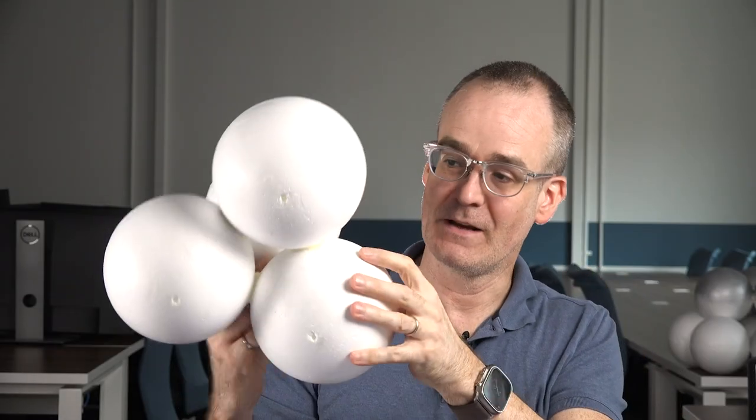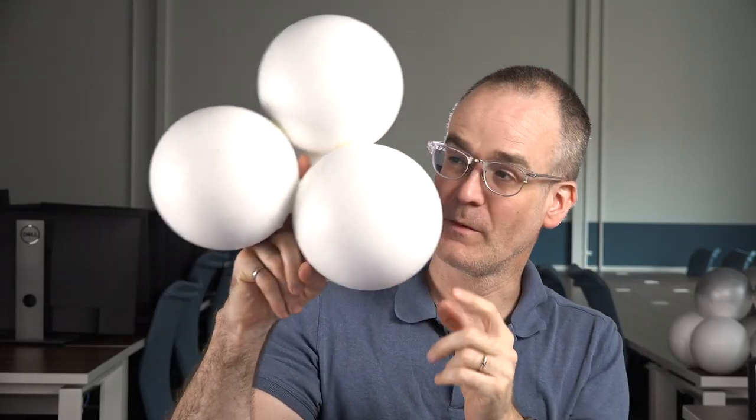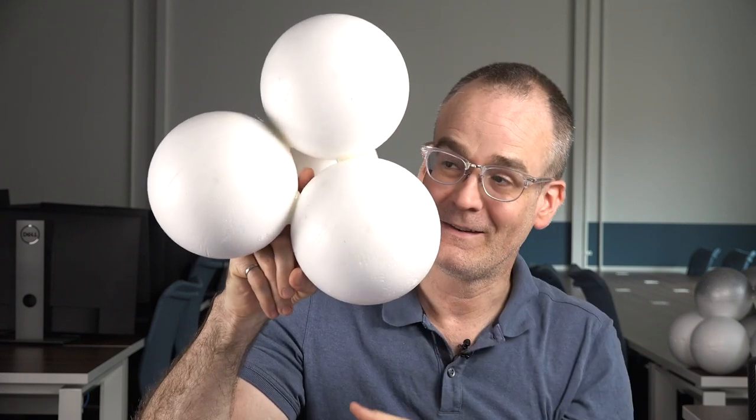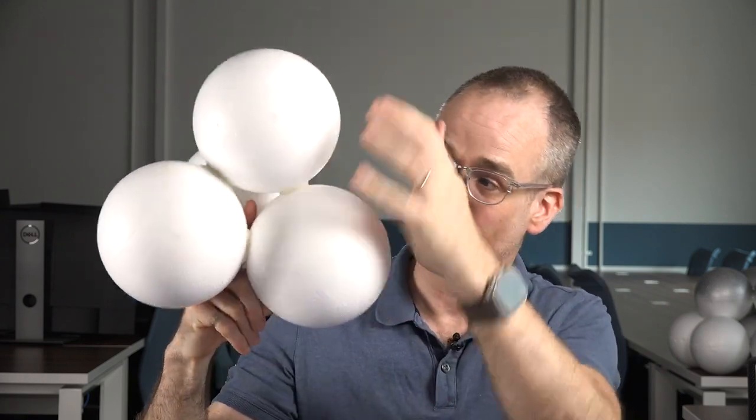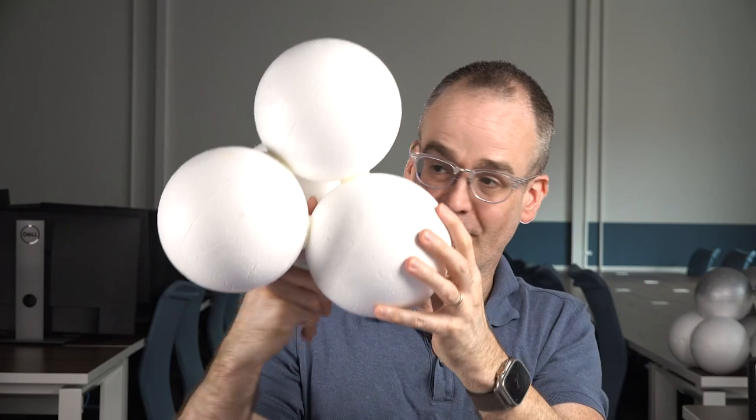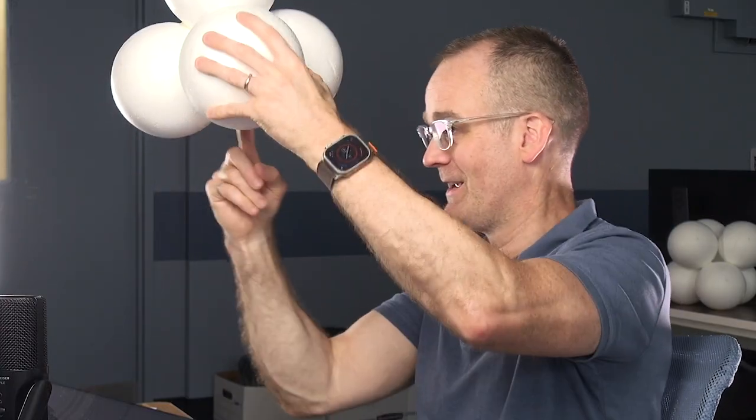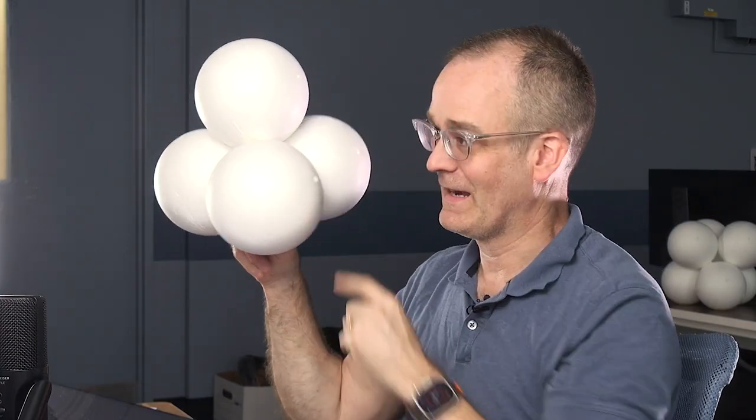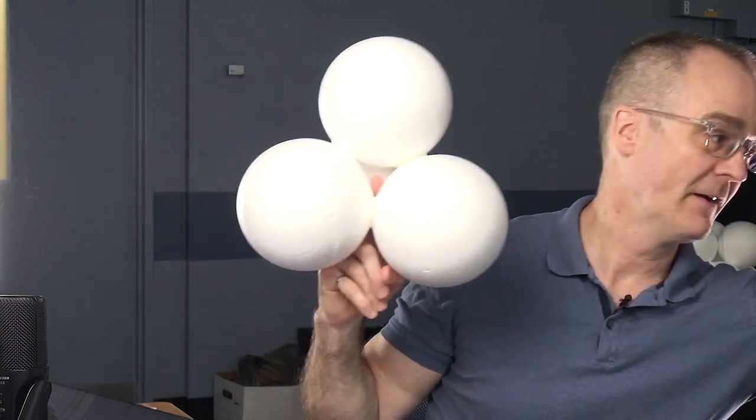So let's take a look at the tetrahedral interstitial site and what we want to do is figure out how big that space is in amongst these four anions. That space that my fingers in, if you will. How big is that? How big of a sphere can I fit in there?